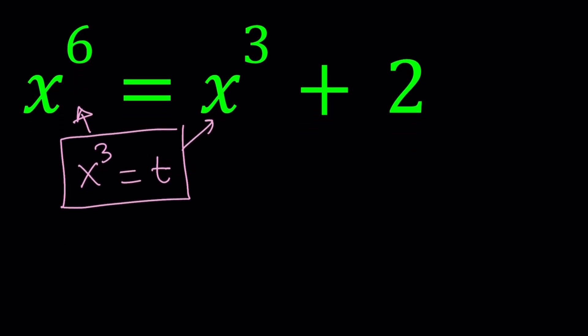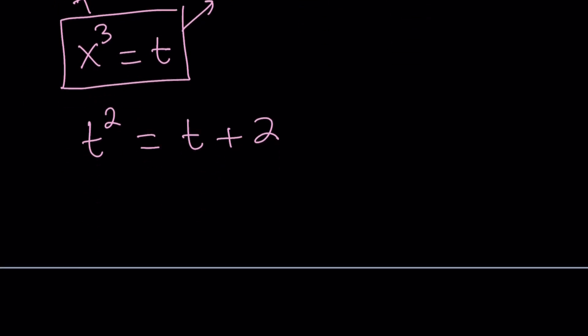That's an important strategy that we often use with these kinds of equations. So if x to the 3rd power is t, then x to the 6th power is going to be t squared. So we're going to get something as simple as t squared equals t plus 2. You can definitely guess and check at this point, but let's go ahead and solve it. We're going to be factoring this equation because we can find two numbers whose product is negative 2 and whose sum is negative 1. And those numbers are negative 2 and 1.